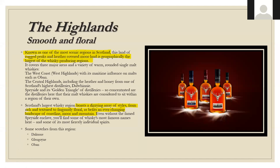The Highlands are known as one of the most scenic regions in all of Scotland — rugged peaks and heather-covered moorland. Geographically the largest whiskey-producing region, it covers three major areas with a variety of warm, rounded single malts. The west coast has more maritime influence on its malts, such as Oban; the central Highlands have more heather and honey notes, with some of the highest distilleries like Dalwhinnie. Scotland's largest whiskey region boasts a dizzying array of styles, from rich and textured to fragrantly floral.